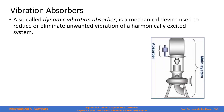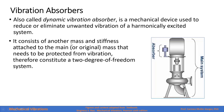The vibration absorber, also called a dynamic vibrational absorber, is a mechanical device used to reduce or eliminate unwanted vibration of a harmonically excited system. It consists of another mass and spring attached to the main or original mass that needs to be protected from vibration, and therefore constitutes a two degrees of freedom system. As we see in this figure, this is the original system, and this here is the mass and stiffness added to the system — it will become the vibration absorber.